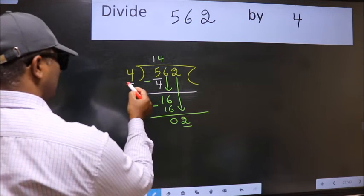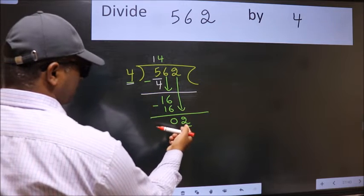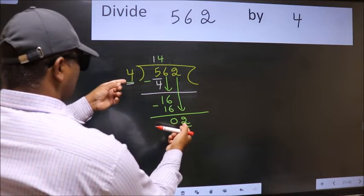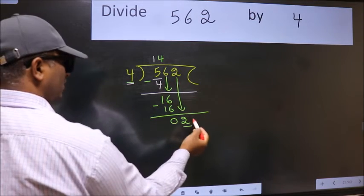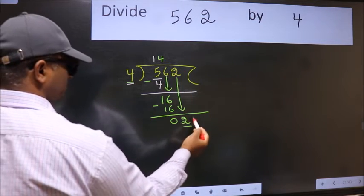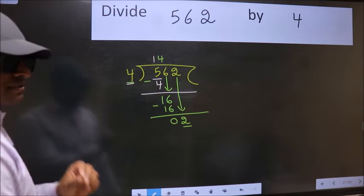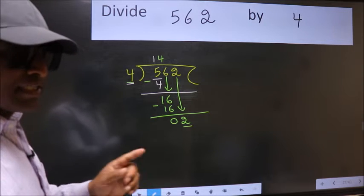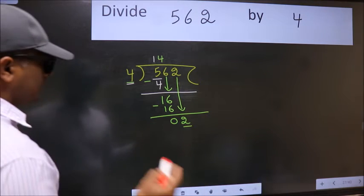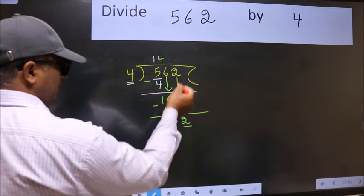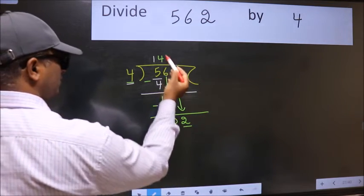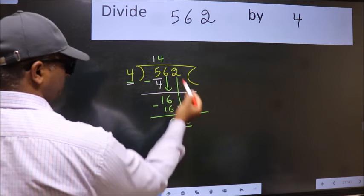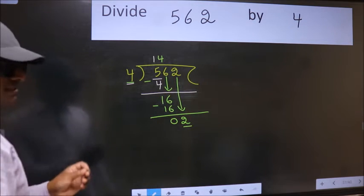Here we have 2 and here 4. 2 is smaller than 4. So what many do is they directly put dot take 0 which is wrong. Why is it wrong? Because just now you brought this number down. And in the same step you want to put dot take 0 which is wrong.